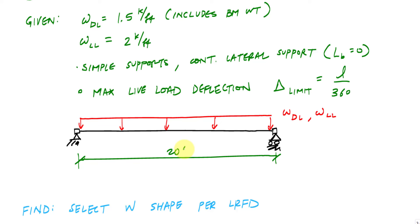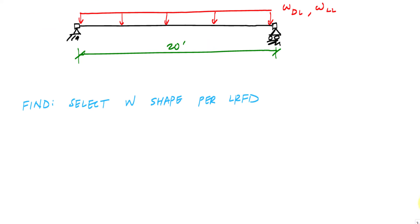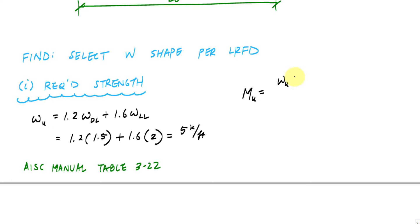So the first thing we need to do is determine the required strength. We should know by now how to analyze the simply supported beam. So here the load combination I'm going to consider is for LRFD, the 1.2 dead plus 1.6 live. This is going to give us five kip per foot. This required moment strength is WL squared over eight, which is 250 kip feet. And then the maximum shear is WL over two, which is 50 kips.